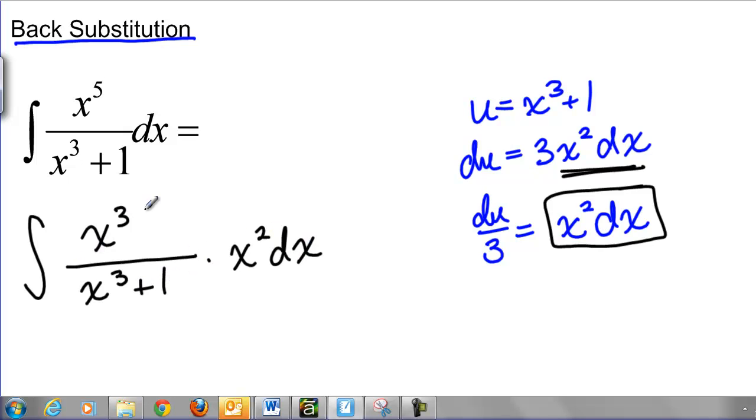So x to the third times x squared is x to the fifth. So I've rewritten my equation but I've done it in such a way that I've pulled out an x squared dx that I can now substitute with the matching x squared dx over here in my list of ways I can replace x's with u's. So this becomes now du over 3.